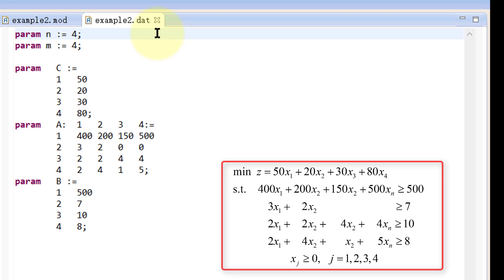We have four decision variables, so n is equal to 4. We have four constraints, so m is equal to 4. Note that we use colon equal to represent value assignment. We have four coefficients in the objective function. So c1 is equal to 50, c2 is equal to 20, and so on. The first column represents the index, and the second column represents the actual value.